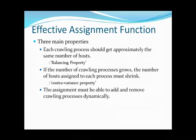An effective assignment function must have three main properties. The balancing property states that each crawling process should get approximately the same number of hosts. The contravariance property states that if the number of crawling processes grows, the number of hosts assigned to each process must shrink. The third property is that the assignment must be able to add and remove crawling processes dynamically.